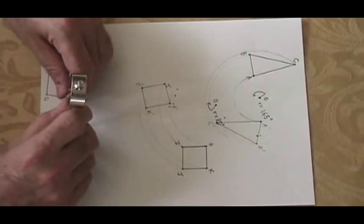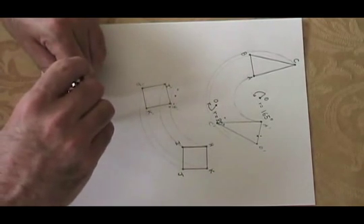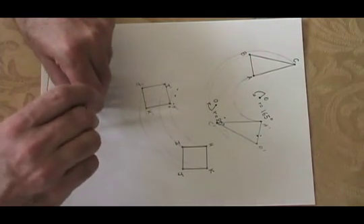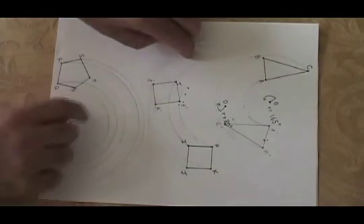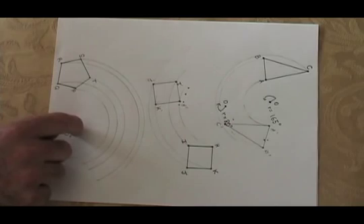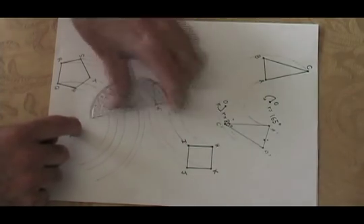I draw arcs clockwise, 110 degrees or more from each of the five vertices. Once I've done all those, I'm finished with the compass. I can put it aside. I need my protractor.